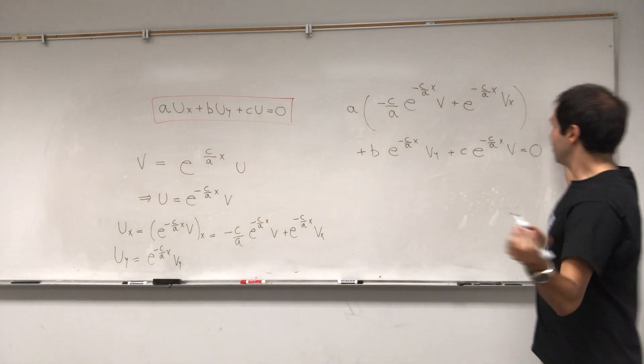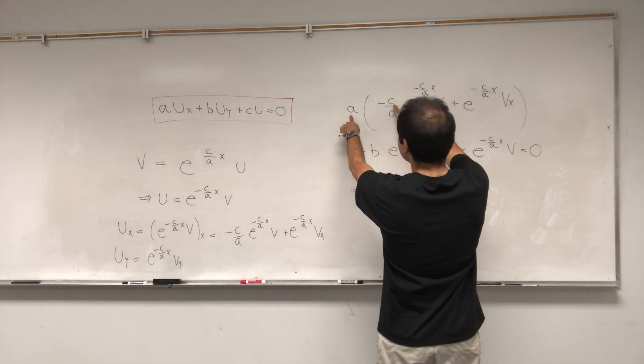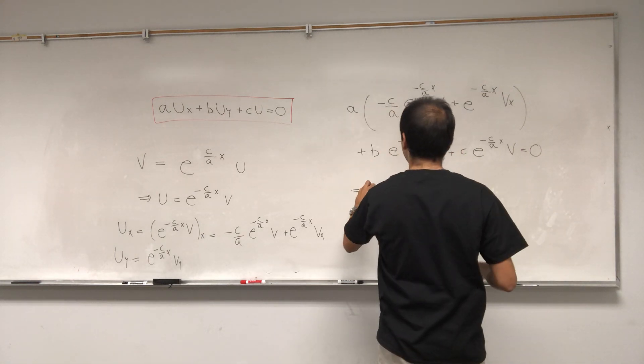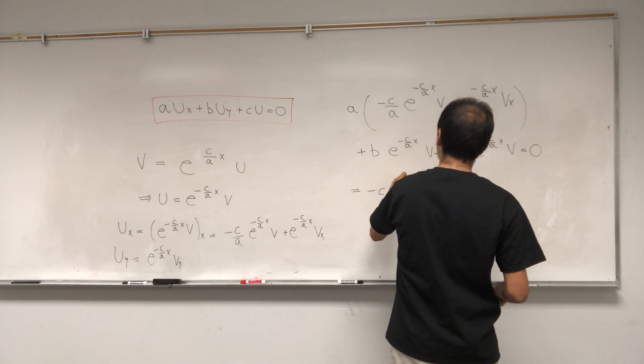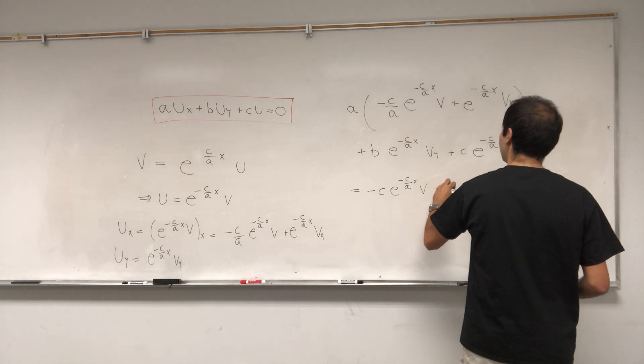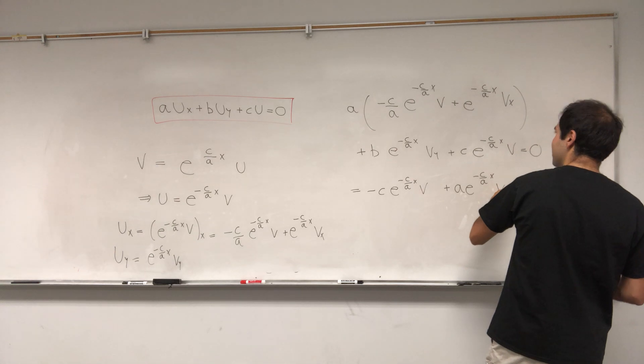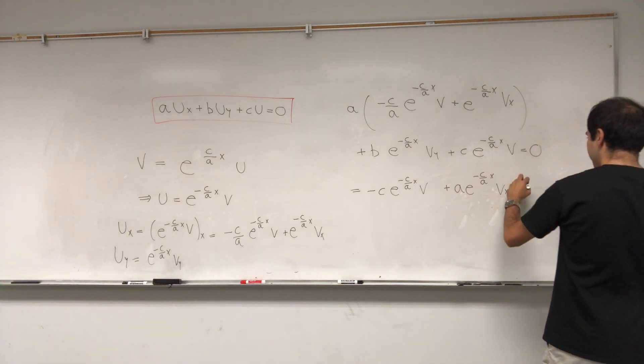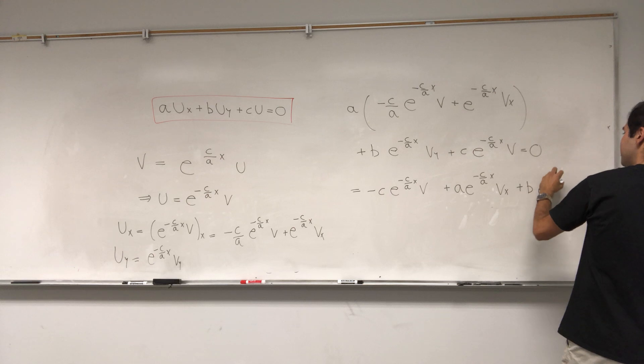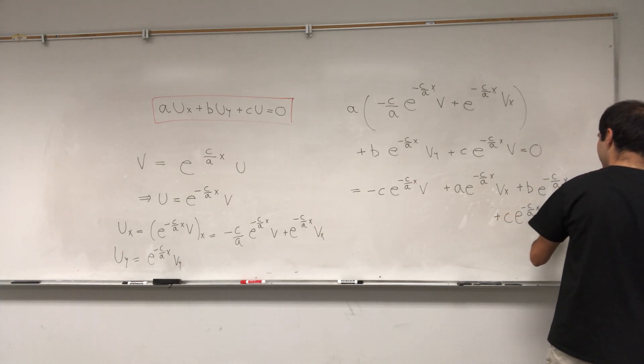Okay, and then, well, it looks like a catastrophe, but let's see if this simplifies. Well, it kind of does. A times minus C over A is minus C, E to the minus C over AXV. Plus A, E to the minus C over AXVX. And then plus C, E to the minus C over AXV equals 0.